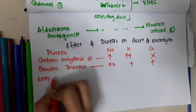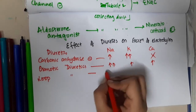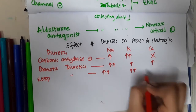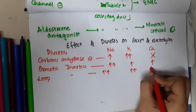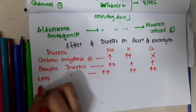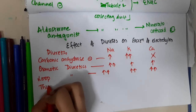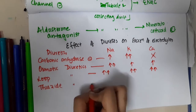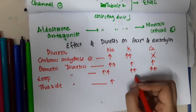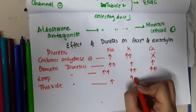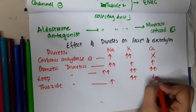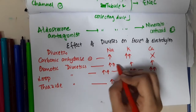Then we have loop diuretics. These will increase sodium excretion, increase potassium excretion, and increase calcium excretion. Then we have thiazide diuretics. These will increase sodium excretion, increase potassium excretion, and decrease calcium excretion.